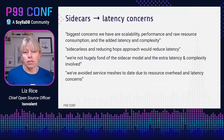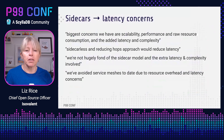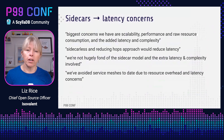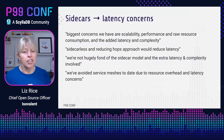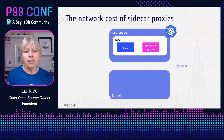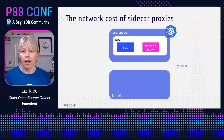So far I've talked about concerns about the sidecar model that apply to any kind of instrumentation — whether that's observability, security, or networking. But there is an additional concern when it comes to sidecars that perform networking functions, and that is the additional latency they add. That's particularly interesting here at P99. Let's talk about the latency cost of adding network proxies into each container as a sidecar.